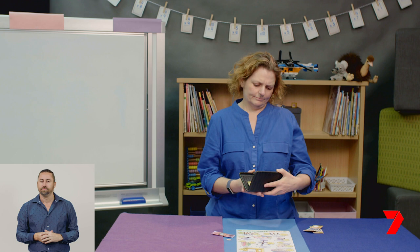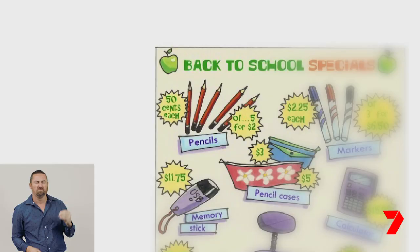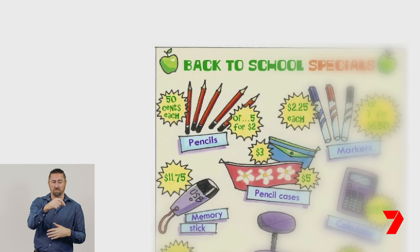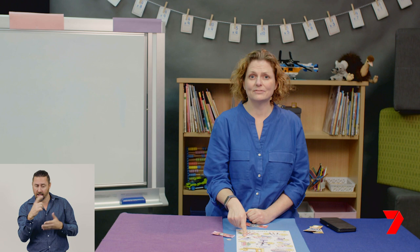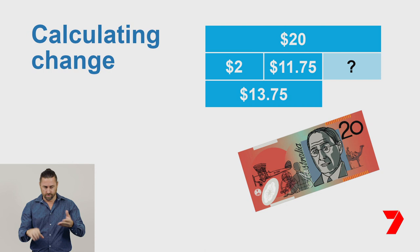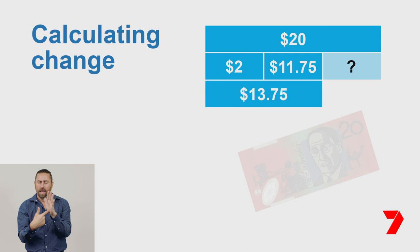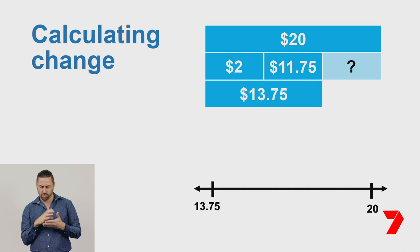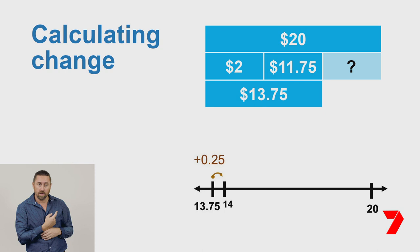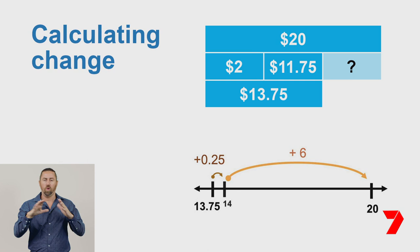Now let's practise these methods to become more fluent at calculating change. I have $20 to spend. I need some pencils to put in my pencil case, so I will buy five of them for $2. And I also need a memory stick — that's $11.75. I have $20 in my purse and I spend $2 and another $11.75, which means I spend a total of $13.75. Let's calculate the change by adding on from $13.75 to $20: add $0.25 to get to $14, then add $6 to get to $20. So our change will be $6.25.